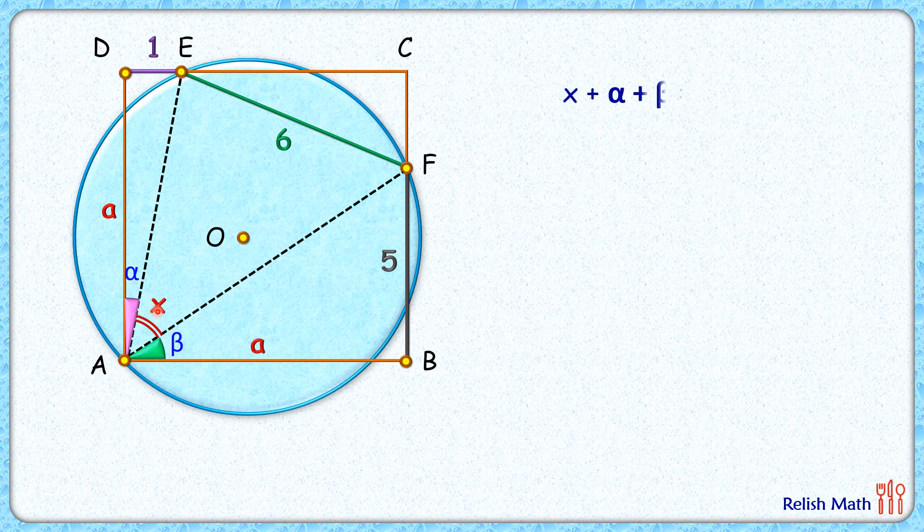To proceed further, let's consider this yellow triangle. Here, DA length and AB length are equal, so we will revolve this yellow triangle by 90 degrees such that AD length will align with AB length.